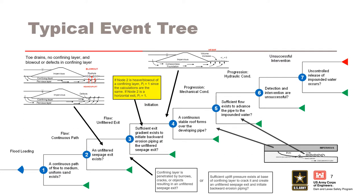In this typical backward erosion piping event tree, node 1 is related to geologic conditions or material susceptibility. Node 2 is related to the presence of an unfiltered exit. Nodes 3 and 5 address the hydraulic conditions for initiation and progression respectively, and will be discussed in more detail. Node 4 assesses the mechanical condition for progression — roofing. Nodes 6 and 7 are unsuccessful intervention and breach. Use the generic event tree as a starting point but adapt for site-specific conditions.